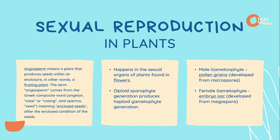In sexual reproduction, flowers are very important. Angiosperms are flowering plants because the flowers are their reproductive organs. Also, the diploid sporophyte generation produces haploid gametophyte generation — this is what we call the alternation of generations. We have different gametes needed for sexual reproduction. The male gametophyte, also called the pollen grains, are developed from microspores. And the female gametophyte, which is our embryo sac, is developed from the megaspore.